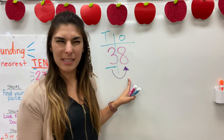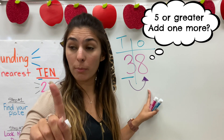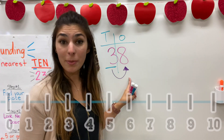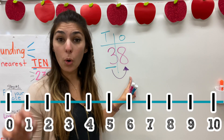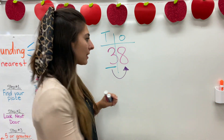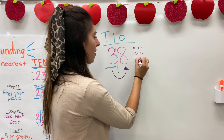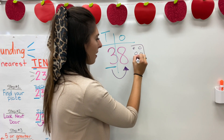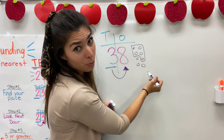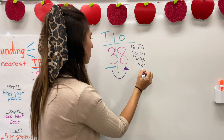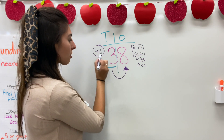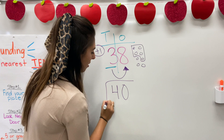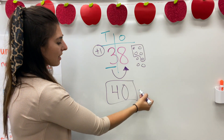Now I'm going to look next door, which is going to be at the eight. I'm going to look at this eight and ask myself: is this five or greater, add one more, or four below, let it go? Is eight greater than five or less than five? It's much more than five, so I'm going to add one more. So what is three plus one? Four!